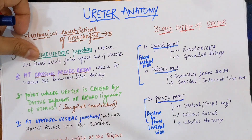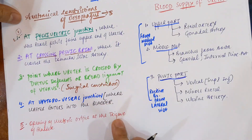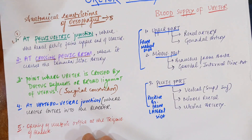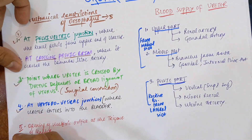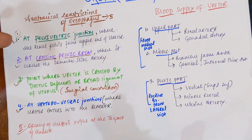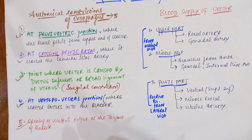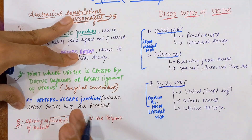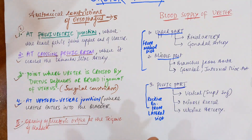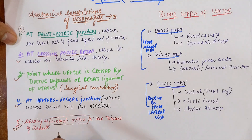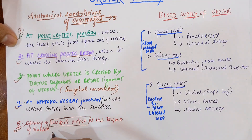The fourth constriction is at the ureter-vesicle junction — when the ureter enters the urinary bladder. There is a constriction caused by the pressure at the point of entry of the ureter into the bladder. The fifth constriction is at the opening of the ureteric orifice in the trigone of the bladder — where the ureter actually opens inside the bladder. This fifth constriction is also a surgical constriction.